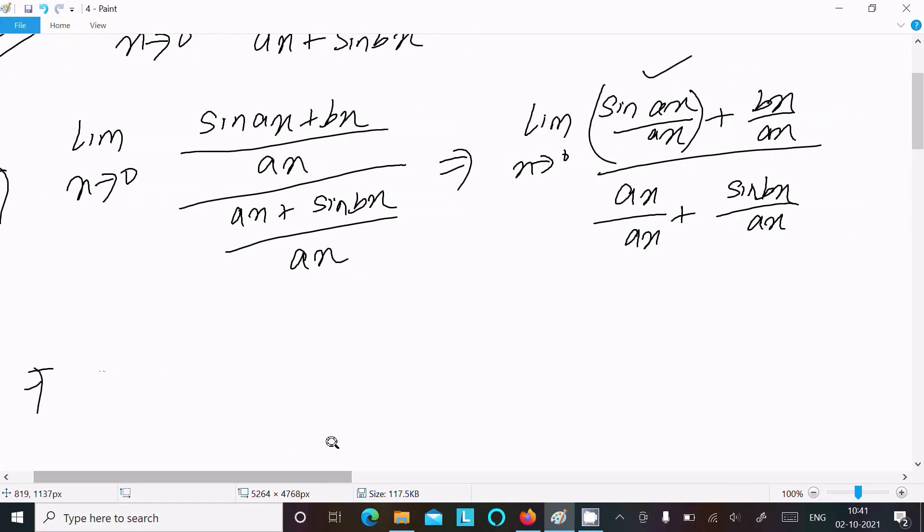To get bx, we multiply both numerator and denominator by b, which cancels out having no net effect. Now, taking the limit as x→0: